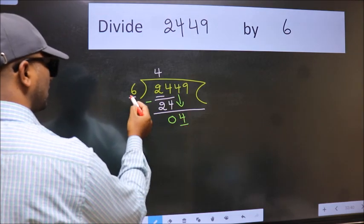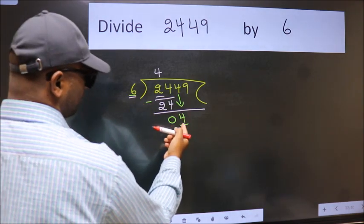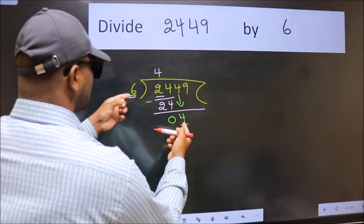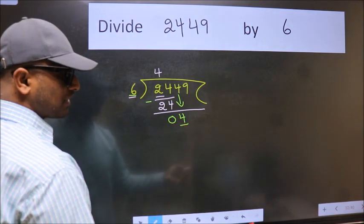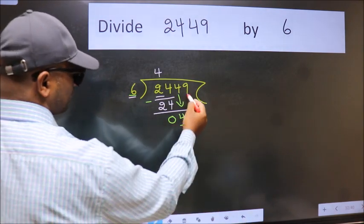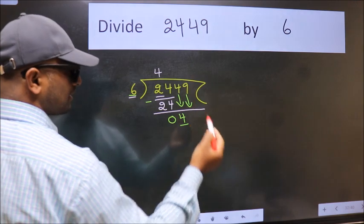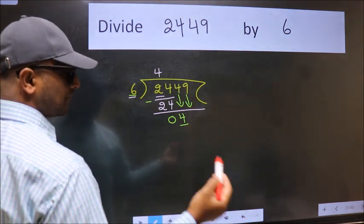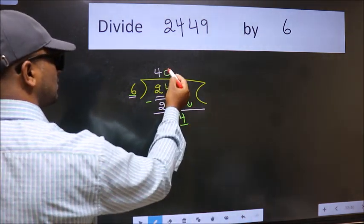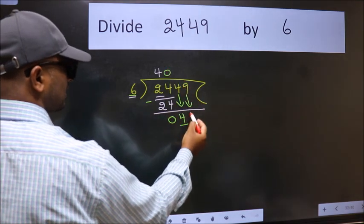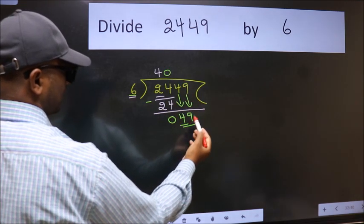Now here we have 4 and here 6. 4 is smaller than 6, so we should bring down the second number. And the rule to bring down second number is put 0 here. Then only we can bring this number down. So 49.